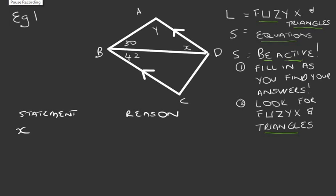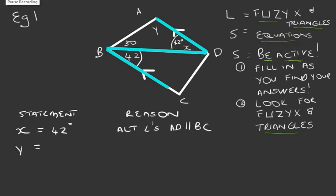So let's have a look and see if you can find X for me. Did you find the Z or the N in the drawing? You did. That's awesome. That means that X is equal to 42 degrees and what would our reason be? Our reason is because the angles are alternate. So remember we spoke about being active. We now need to fill in the angle in that we found X equal to 42 degrees.